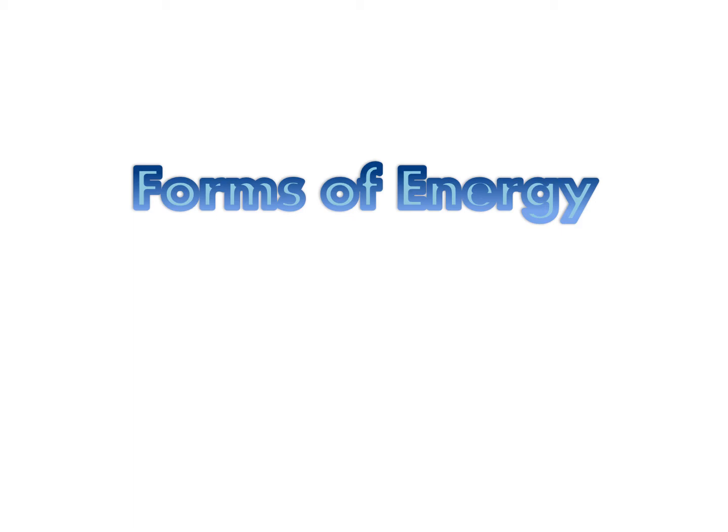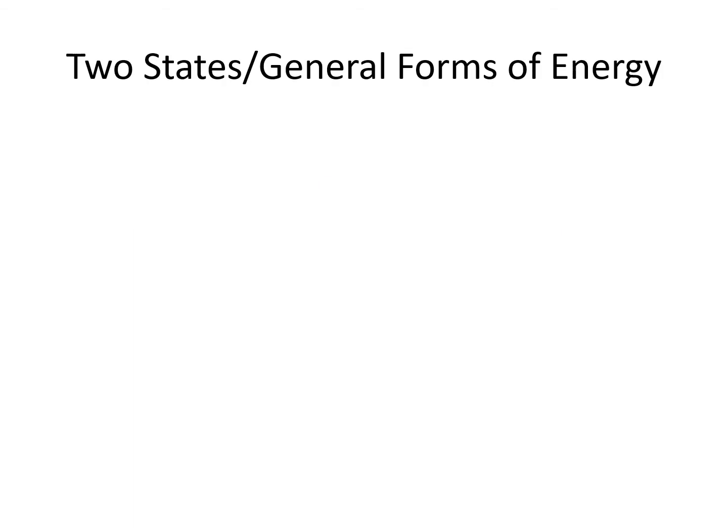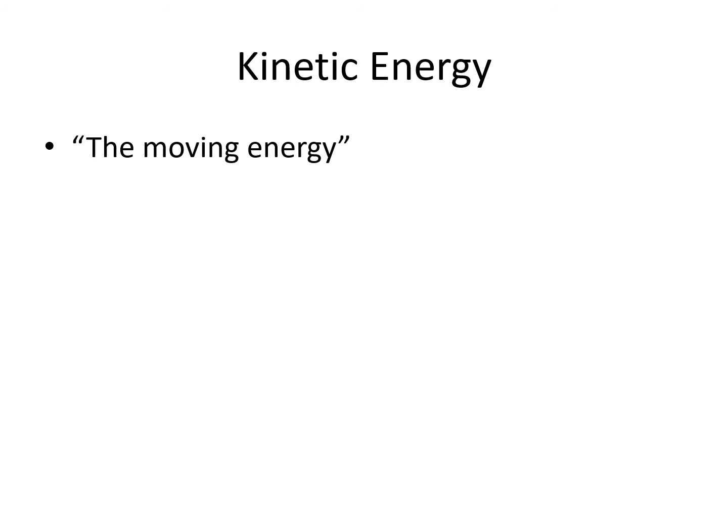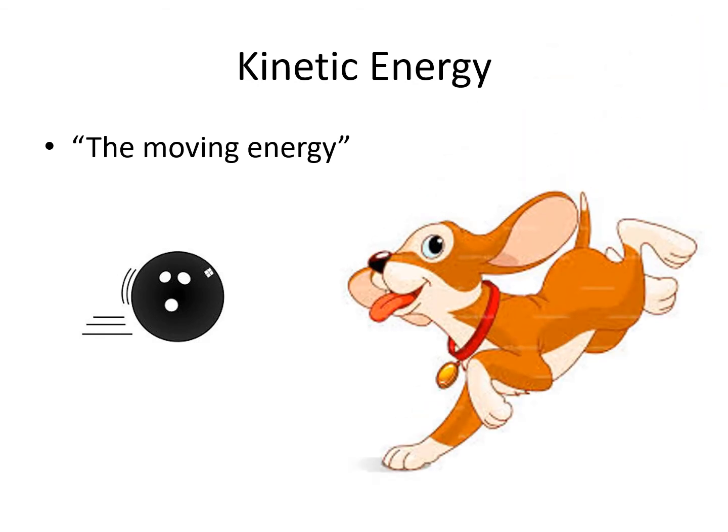Let us now recall the different forms of energy. There are two states or general forms of energy: kinetic energy and potential energy. Kinetic energy is the moving energy, or the energy possessed by moving objects. Examples are a bowling ball rolling on an alley or a jumping dog.